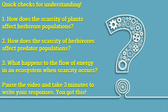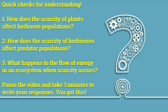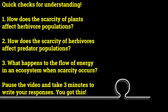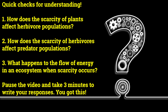Quick checks for understanding. Number one: how does the scarcity of herbivores affect predator populations? Number three: what happens to the flow of energy in an ecosystem when scarcity occurs? Pause the video and take three minutes to write your responses. You got this.